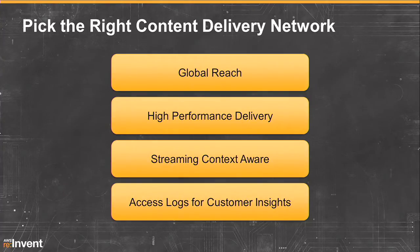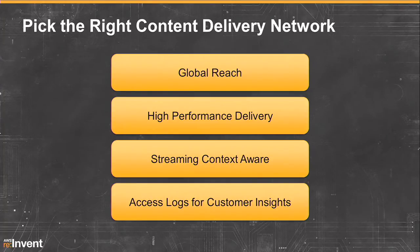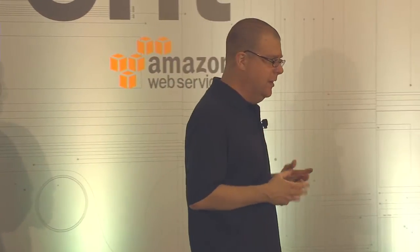I run the content delivery business for AWS CloudFront. We think that picking the right content delivery network is a critical part of getting to that reduction in cost, reduction in viewers receiving a bad experience, and reduction in complexity. Content delivery networks give you global reach, let you optimize for throughput and availability, and give you a great source of access logs to mine in order to see who's doing what with your content.